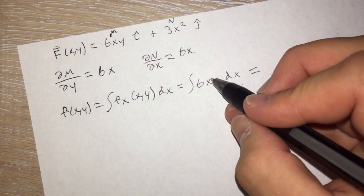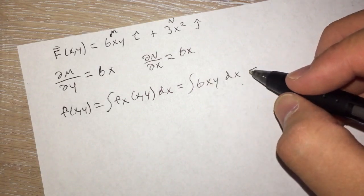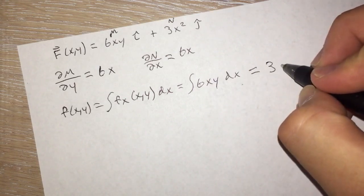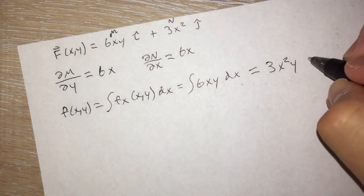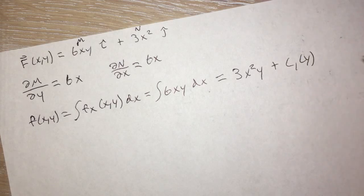Which then if we add power to the x and divide by the 2, this will actually bring that 6 down to a 3. So we'll end up with 3x²y. And then we also have to add our plus c₁ of y.